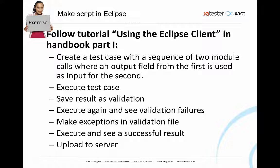The tutorial will introduce you to everything in the exercise. You will create a test case with a sequence of two module calls, using one output field from the first module execution as input to the second. You will execute the test case, use save results as future validation, execute again to see a validation failure due to a timestamp, open the validation file to make an exception rule excluding that field, execute again to get a successful result, and finally upload the test case to the server to find and execute it from the web client.